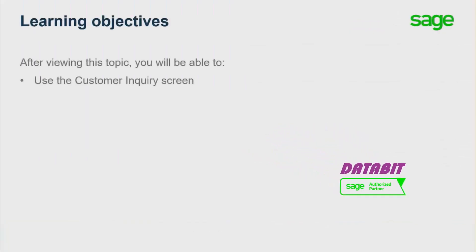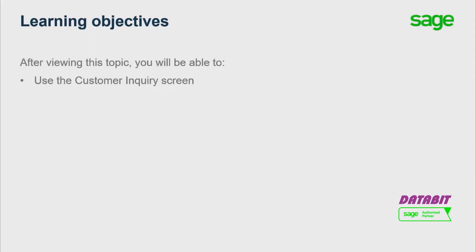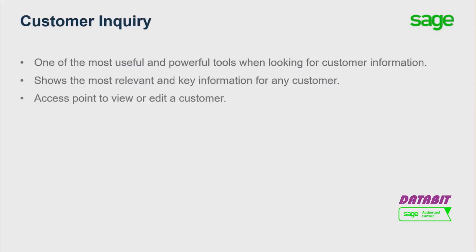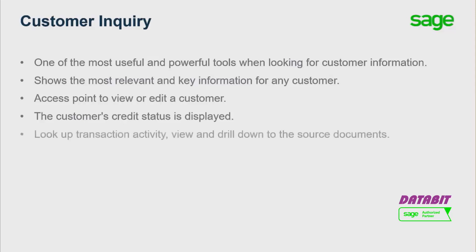Over the next few minutes we will show you how to use the Customer Inquiry screen. The AR Customer Inquiry screen is one of the most useful and powerful tools when looking for customer information. It shows the most relevant and key information for any given customer. You can use this screen to open up a customer record for viewing or editing. The customer's credit status is displayed including pending, outstanding, and overdue balances. You can also look up relevant transaction activity and view and drill down to the source documents in both Accounts Receivable and Order Entry.